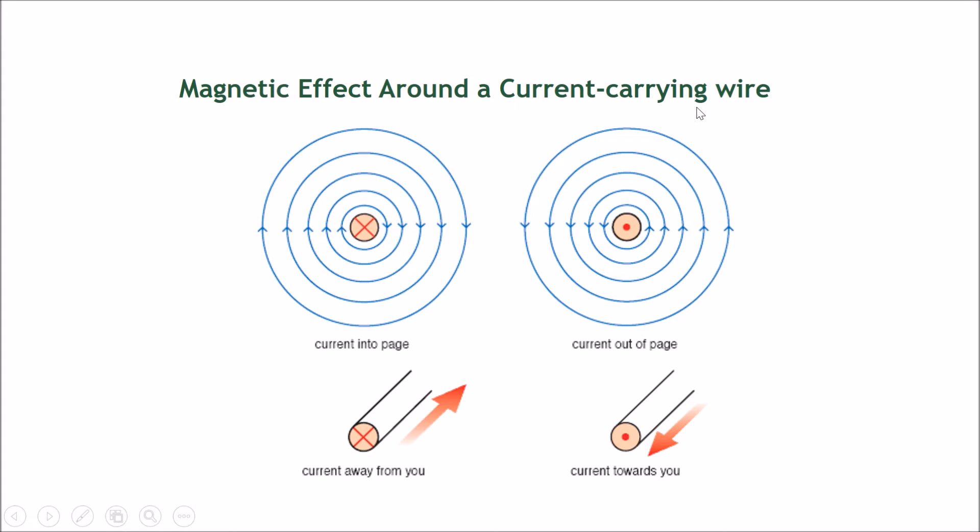Let's look at this part, the magnetic effect around a current carrying wire. This cross here and a circle, think of it as a wire that is going into the page. Imagine you're looking at the back side of the wire, and the current is flowing from you into the page.